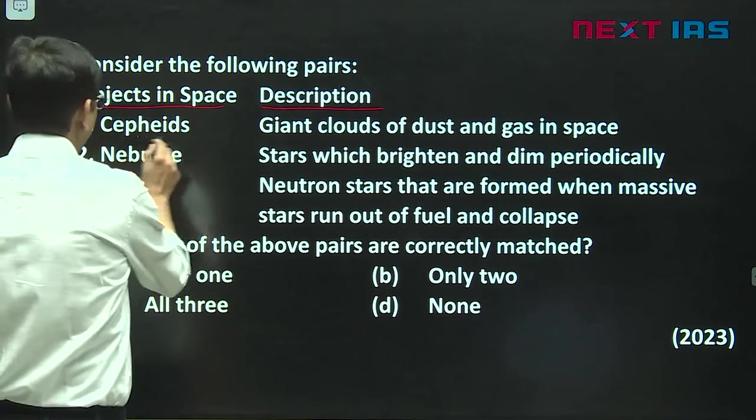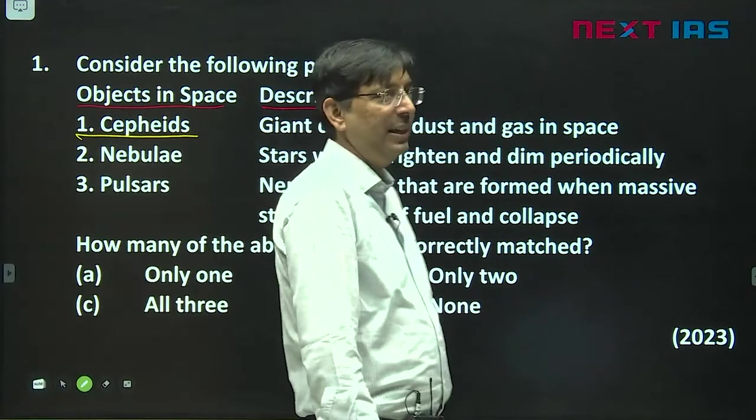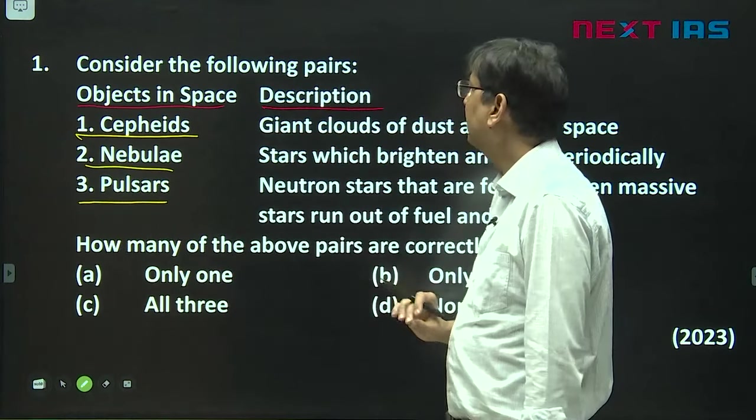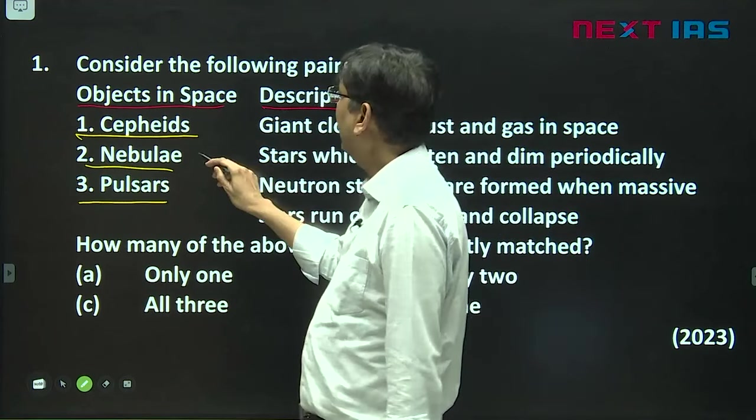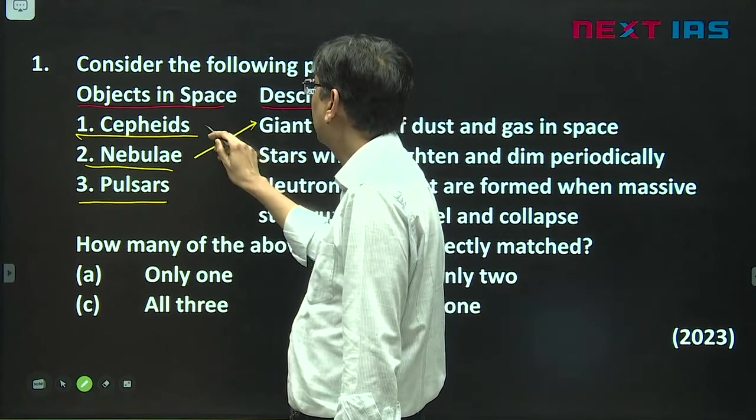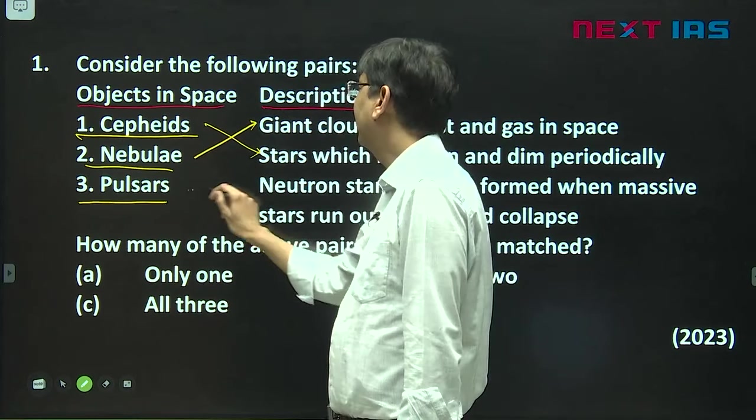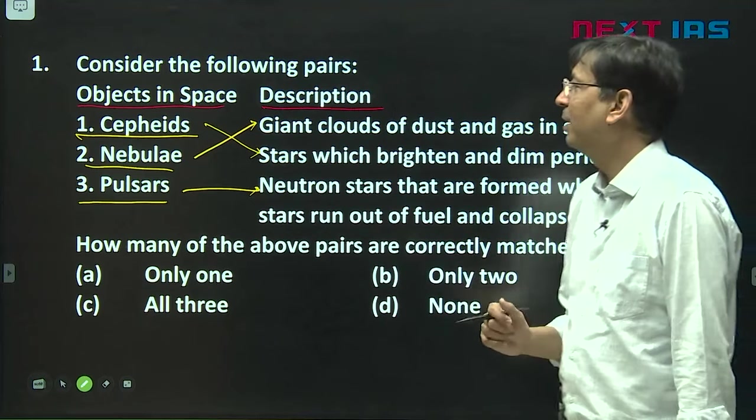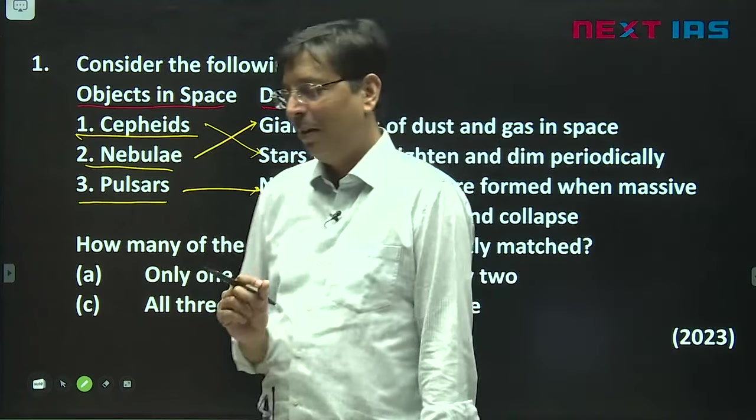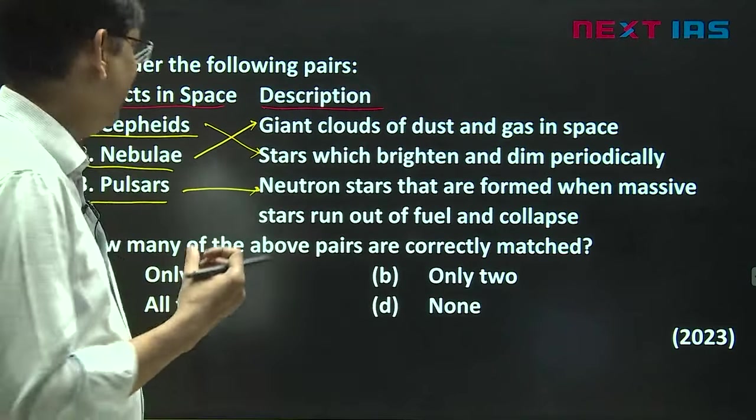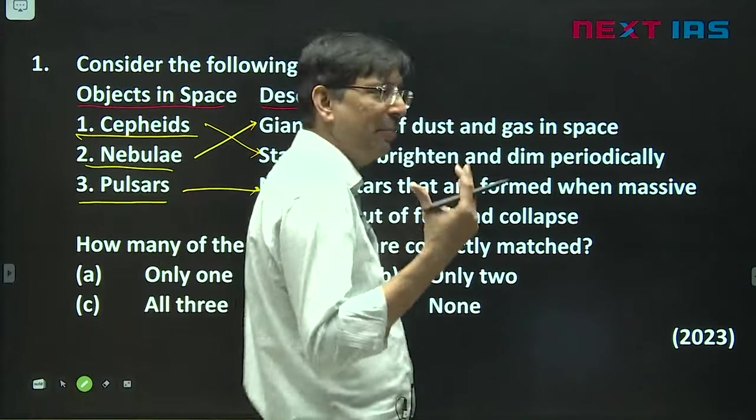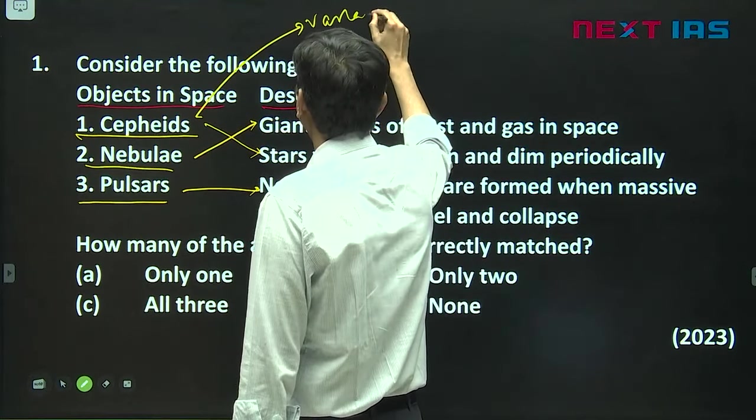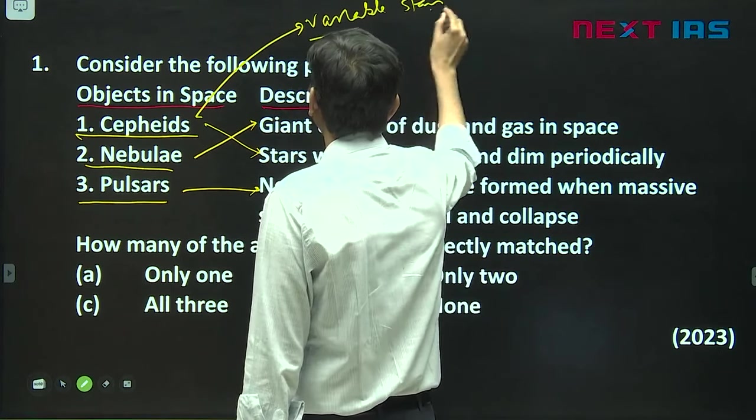If you see here, first thing is Cepheid, what is Cepheid, then what is Nebula and what is Pulsar. They have just exchanged or interchanged the descriptions. First, start with Cepheids. Actually, Cepheids are the variable stars.